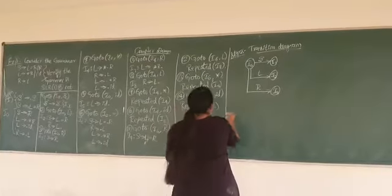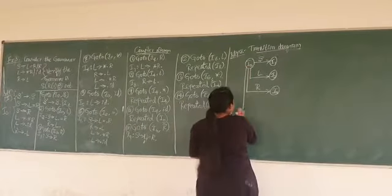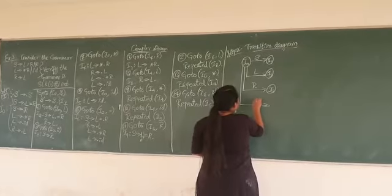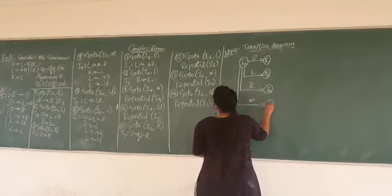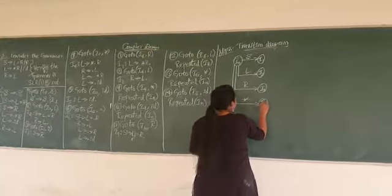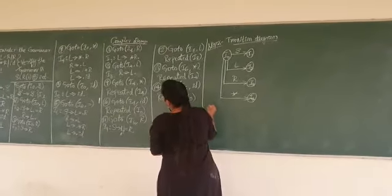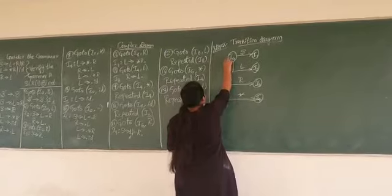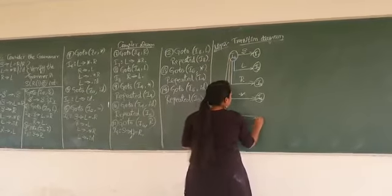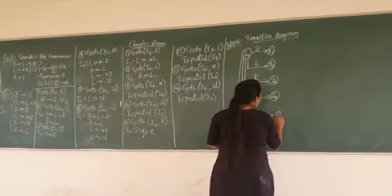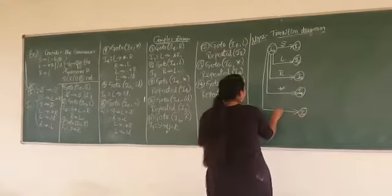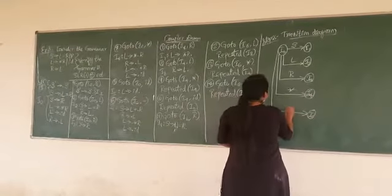Next, I0 upon star. It produces new item, that is I4. Next, I0 upon ID. I0 upon ID produces the new state, that is I5.